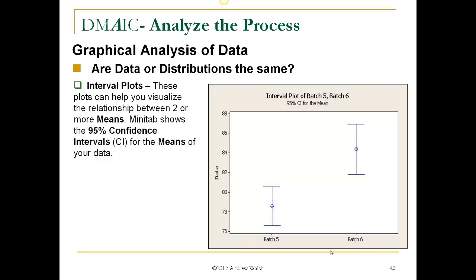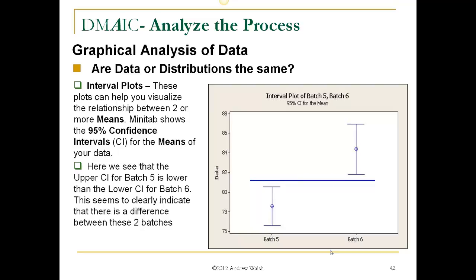So let's look at interval plots. These plots can help you visualize the relationship between two or more means. Minitab shows the 95% confidence intervals for the means of your data. That means Minitab, or the statistical analysis, is 95% confident that the mean is between those two points. Here we see that the upper confidence interval for batch 5 is lower than the lower confidence interval for batch 6. This seems to clearly indicate that there is a difference between these two batches. The means are definitely not overlapping whatsoever. They are different means.